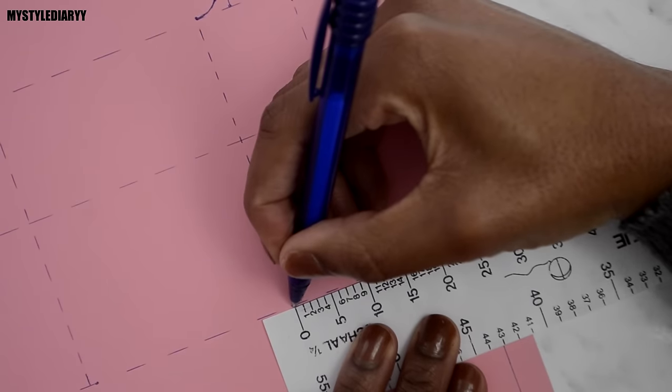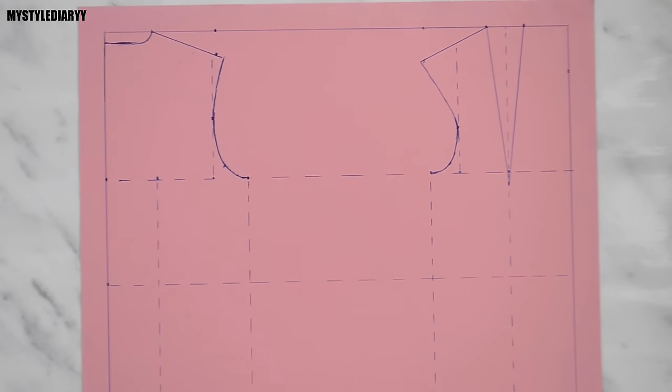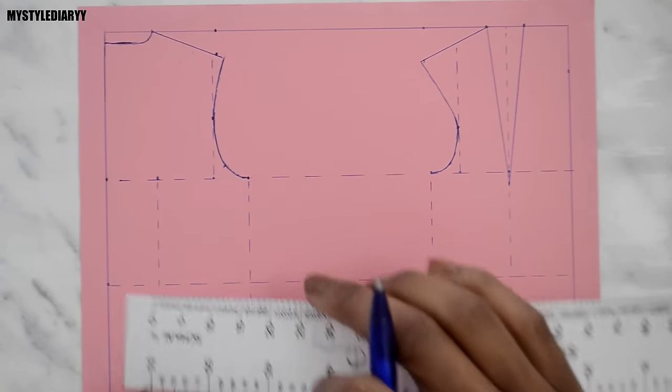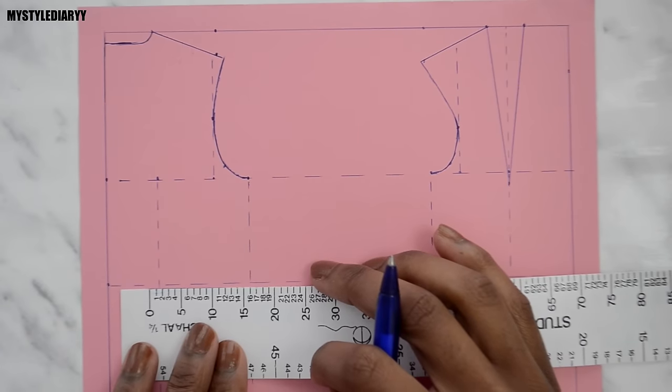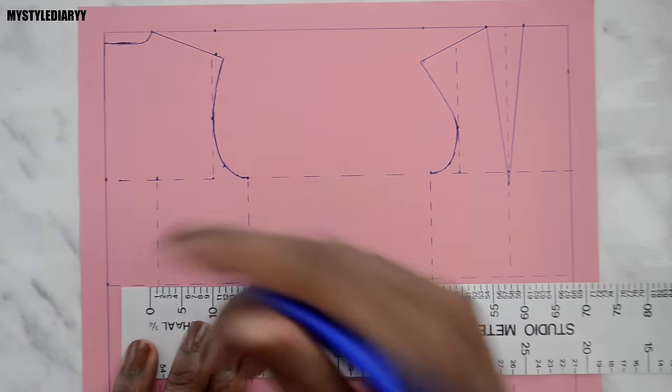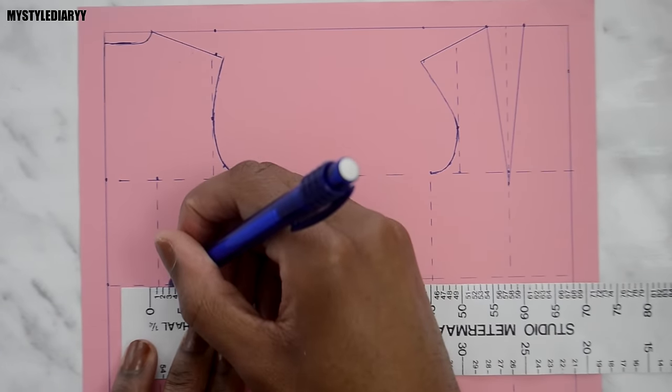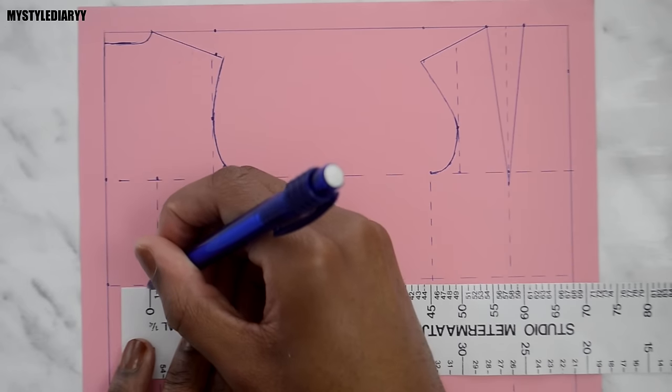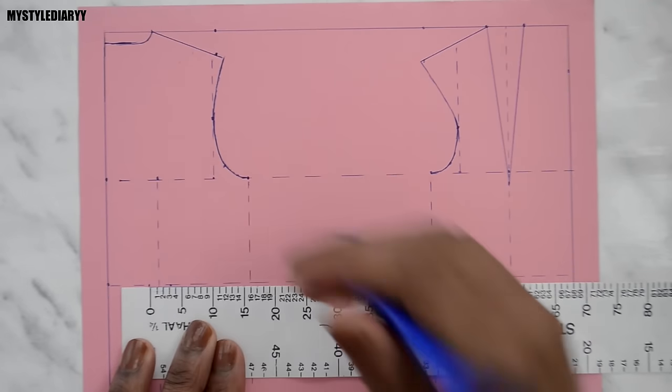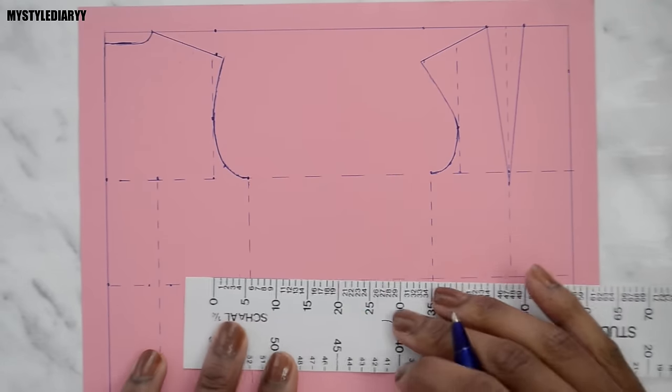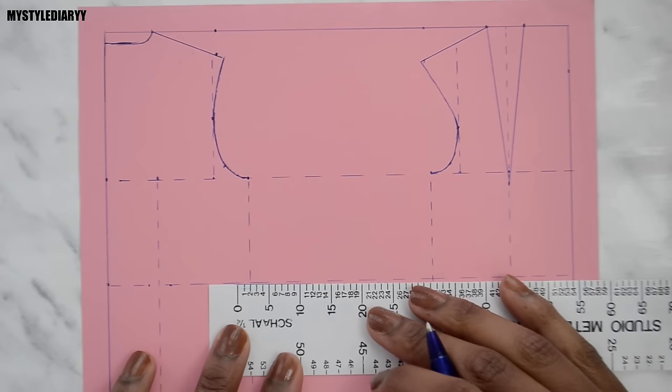Mark down a quarter of the hip measurement. Now it's time to draw in the darts. For that you will need your bust and waist measurement. Divide both measurements in half. After that subtract the waist from the bust. The outcome you will get is the number you need to divide up on the waistline of the front and back bodice, which I'm doing now.